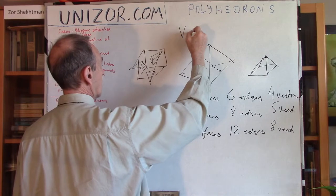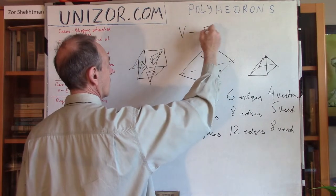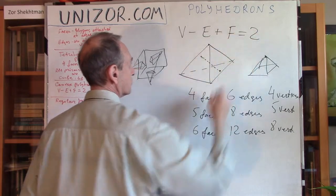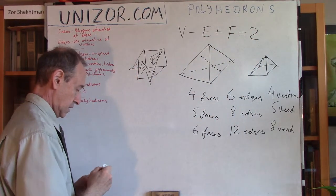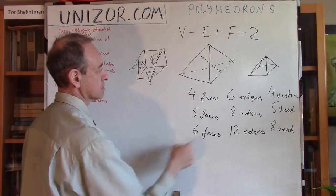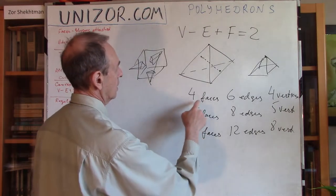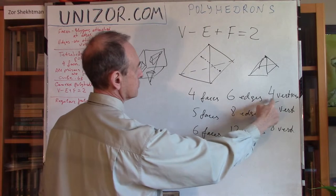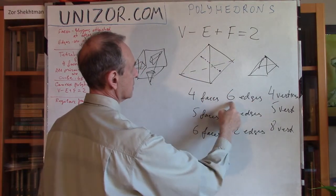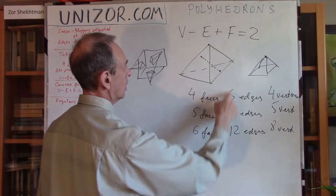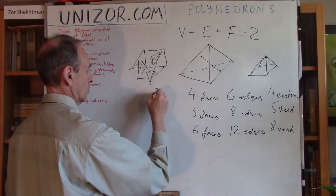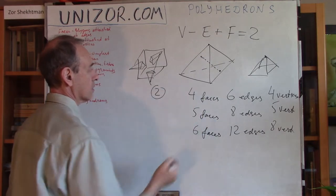And the formula is the following. Number of vertices minus number of edges plus number of faces is equal to 2 for a convex polyhedron. Let's just check it for these three cases. Vertices is 4, edges 6, 4 minus 6, minus 2, plus faces, we get 2. Minus 2 and 4 is 2.